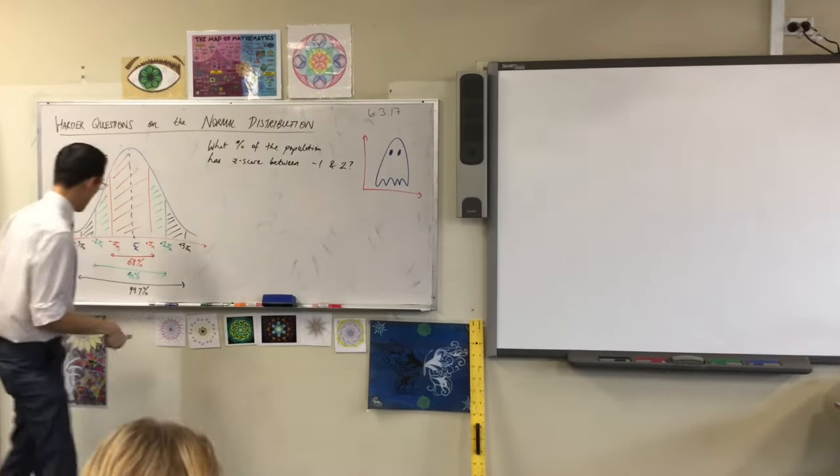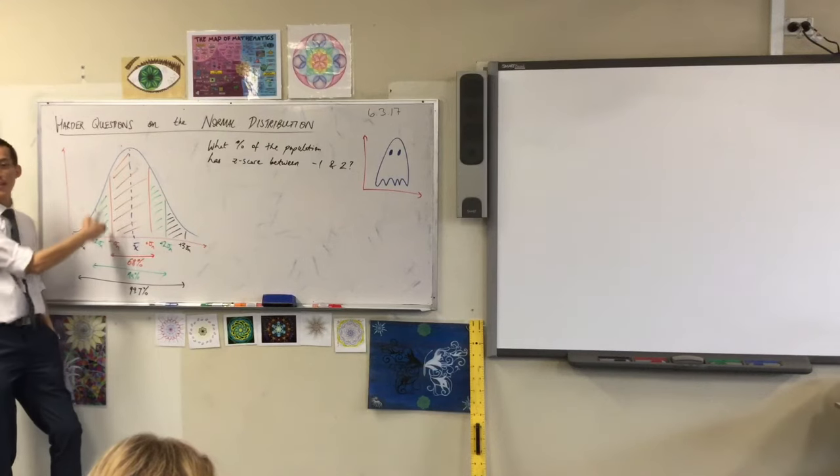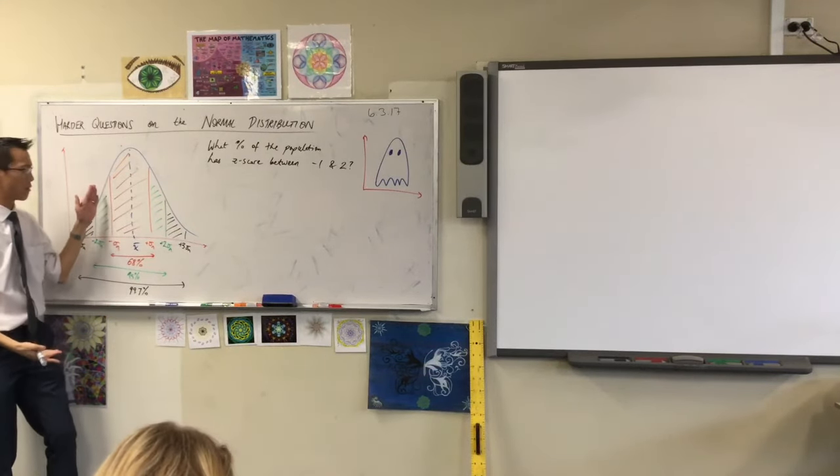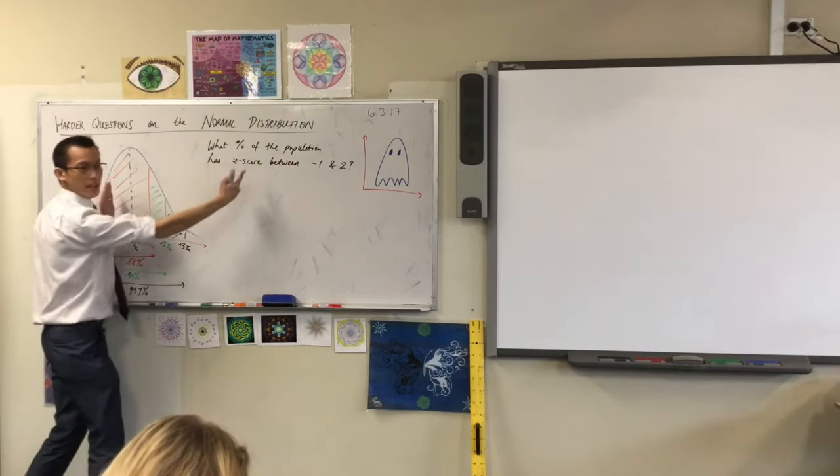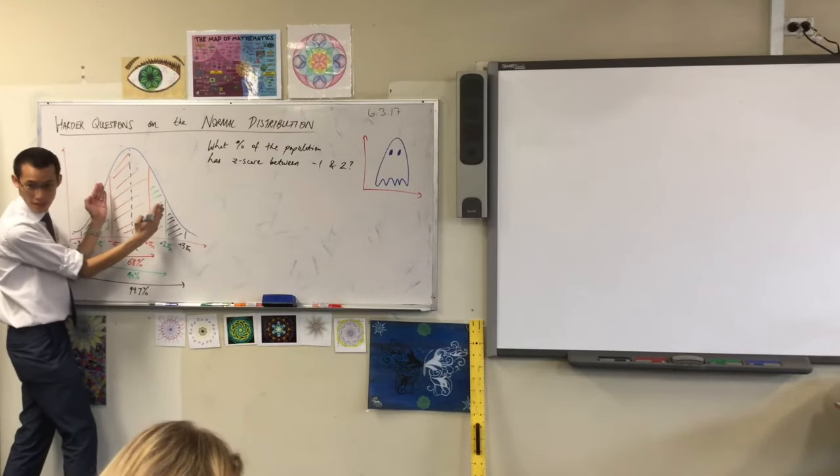So I want you to have a look at the graph, the distribution, and where these things belong. So negative one, do you see that this guy over here, right? All of these people on this line have a z-score of negative one. What about two? What is two? Yeah, it's this green line over here, right? So the question is asking, how much of this population is in this boundary here?